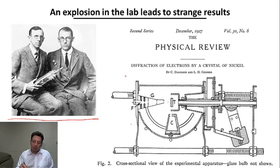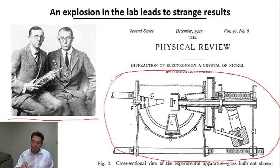So here is the diagram from their original paper they eventually published in 1927, which shows the apparatus they used. So here we have this part, which is an electron gun, which shoots electrons towards the target. And this part is a nickel target they were studying.